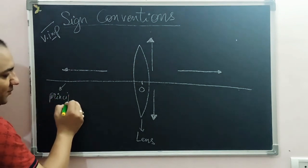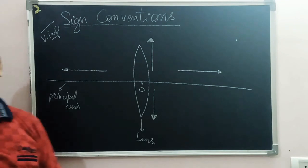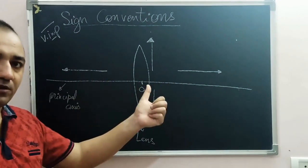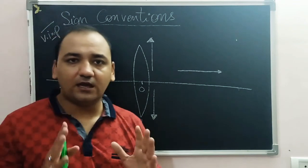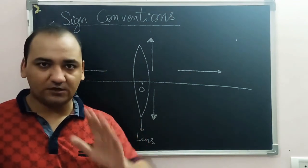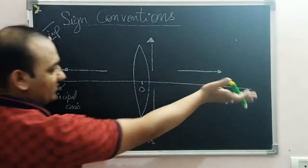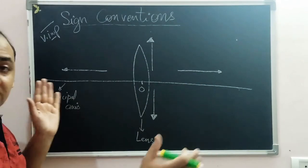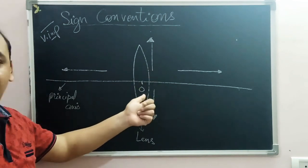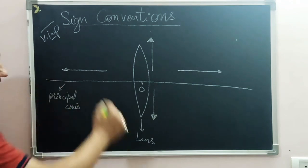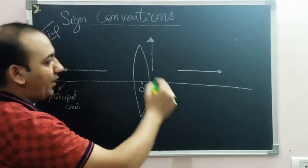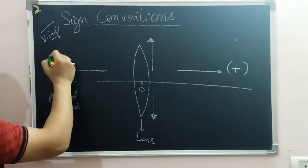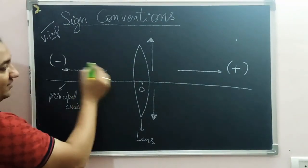Let's study what the sign conventions say. Assume we have a lens with its principal axis. Distances are measured in two ways: horizontal distance and vertical distance. Horizontal distance is measured from the optical center (which acts like the origin). For a real image, the object is on one side and the image is on the other side of the lens.